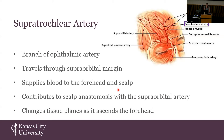The supratrochlear artery is a branch of the ophthalmic artery, the first branch off the internal carotid artery. The supratrochlear artery travels through the supraorbital margin, either through the supratrochlear foramen or a supratrochlear notch. It supplies blood to the forehead and scalp and contributes to a scalp anastomosis with the supraorbital artery.